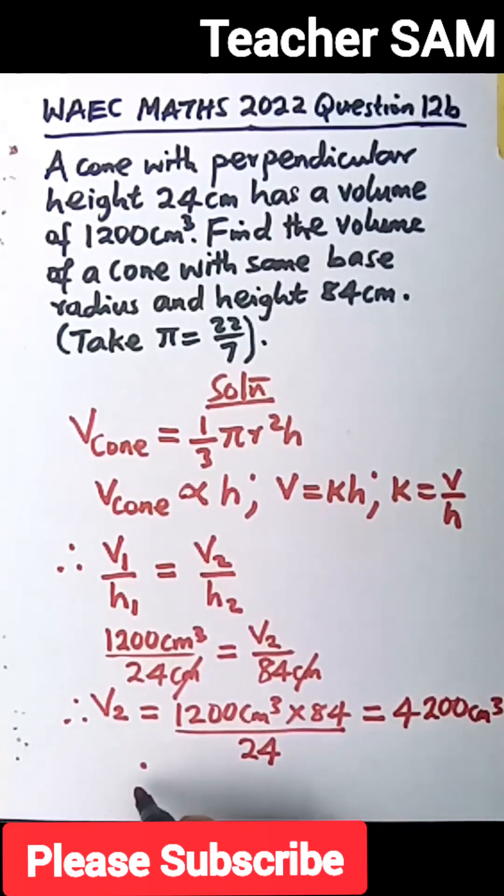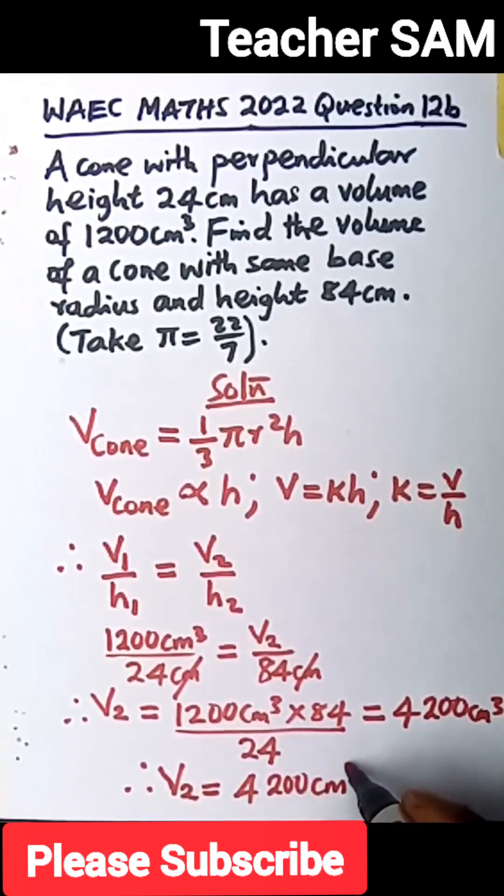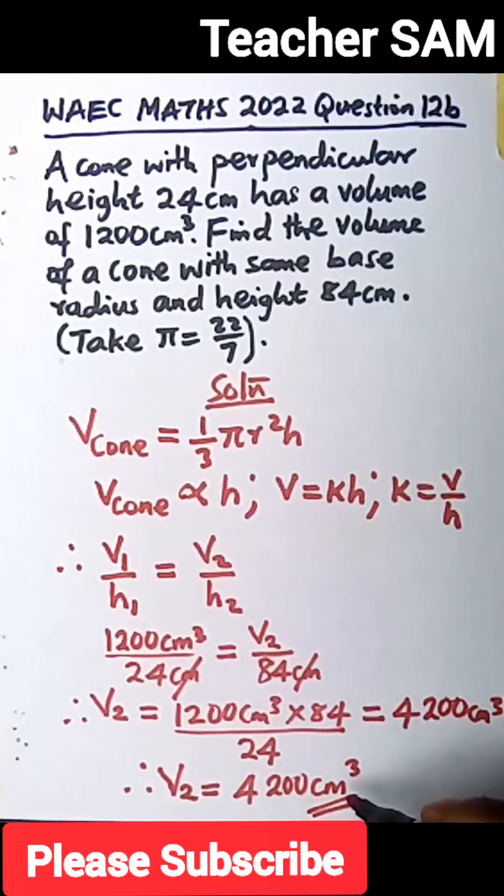Therefore, our volume, the second volume as required by the equation, is 4,200 cm cubed. Please remember that the unit is science or science-related subject as well. It's very, very important. We have to indicate the cube, knowing that it's volume. That is the answer to this question.